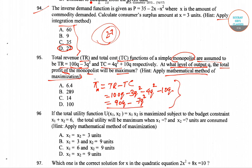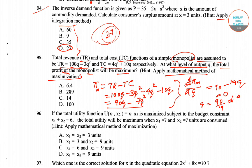Differentiating the profit function with respect to quantity gives 90 minus 14q. Setting this equal to zero, we get q equals 90 divided by 14, which is approximately 6.43. This is option A. For the monopolist, the profit-maximizing output is where the differentiated profit function equals zero.